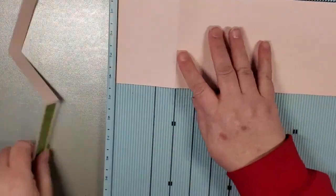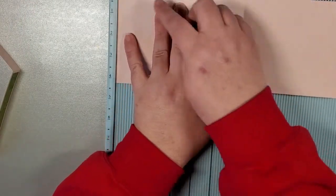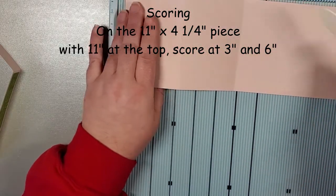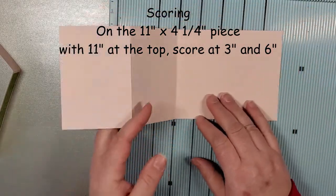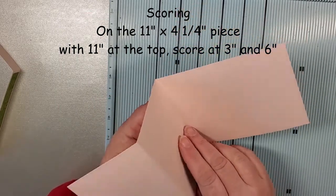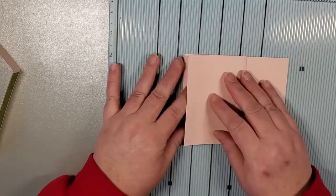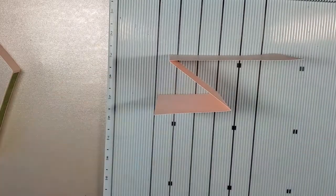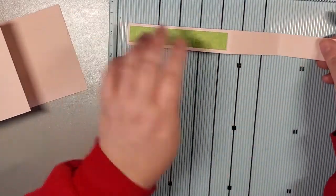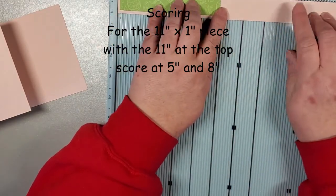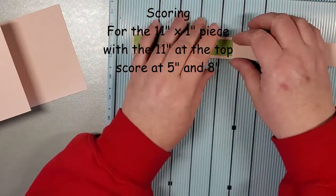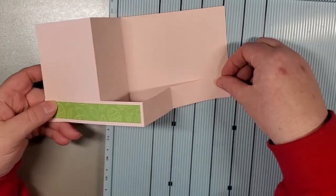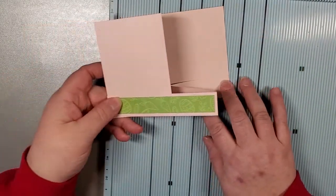With the 11 by 4 and a quarter piece, you have the 11 inches at the top and you're going to score at 3 and at 6. I usually fold the second score line first, and then the first line just fold that back and it should all line up. Then with the other strip, you are going to score at 5 inches and at 8 inches. This back piece is just going to lay like that.